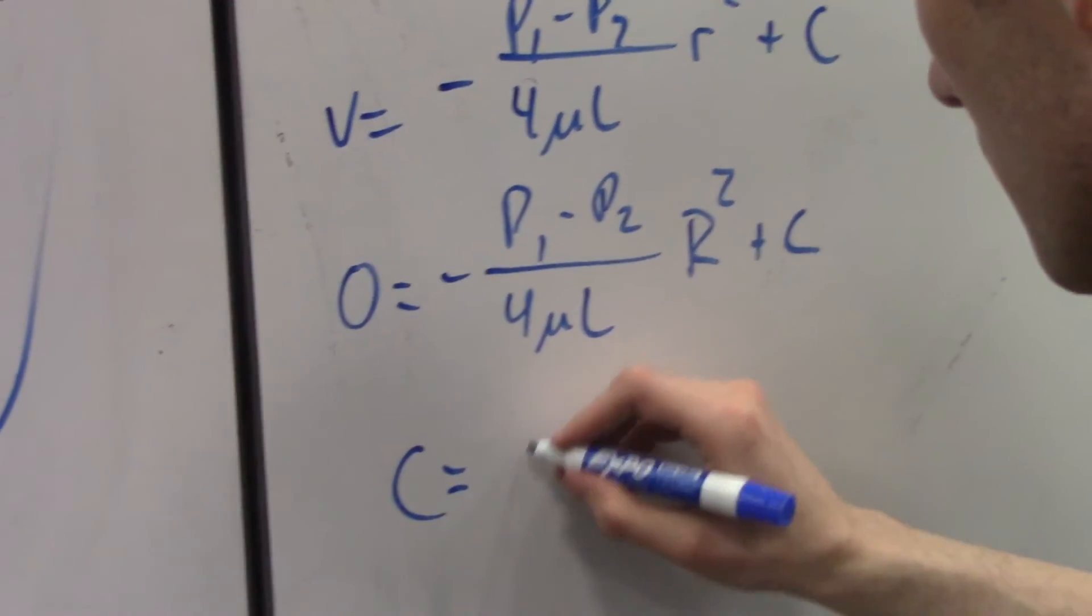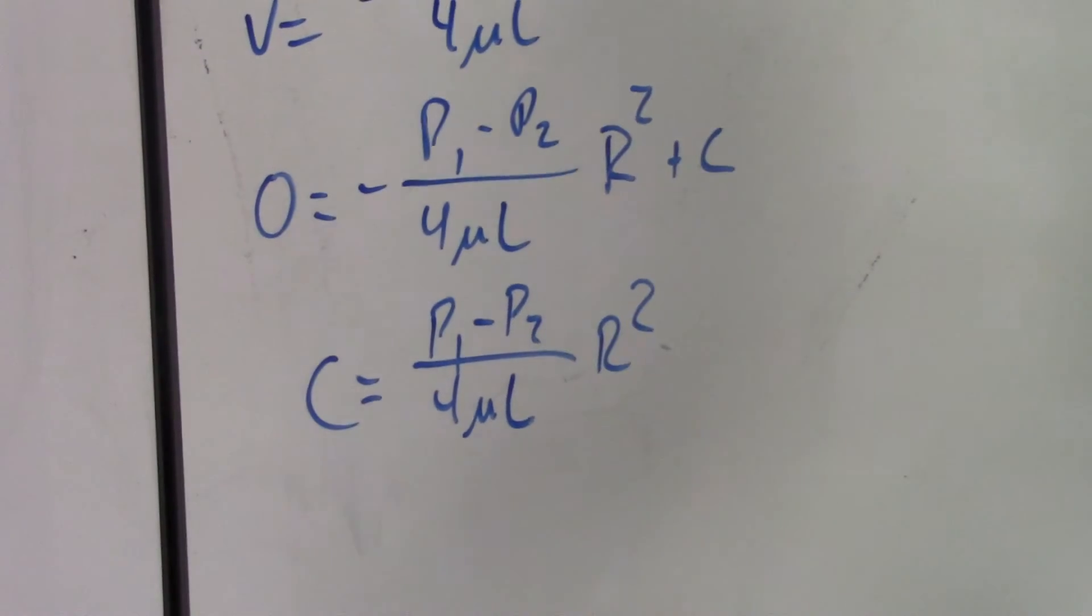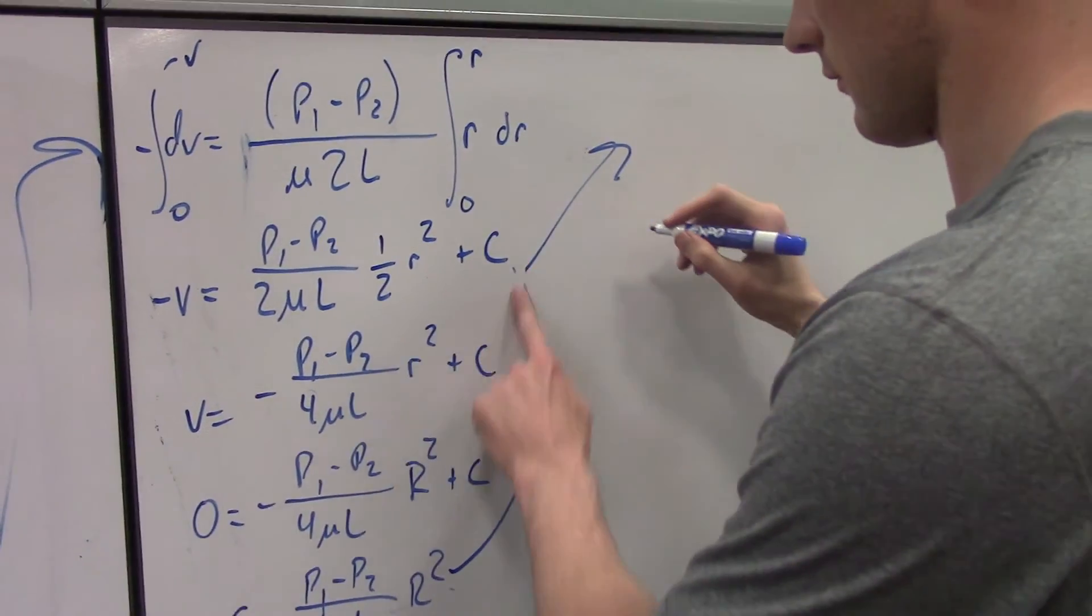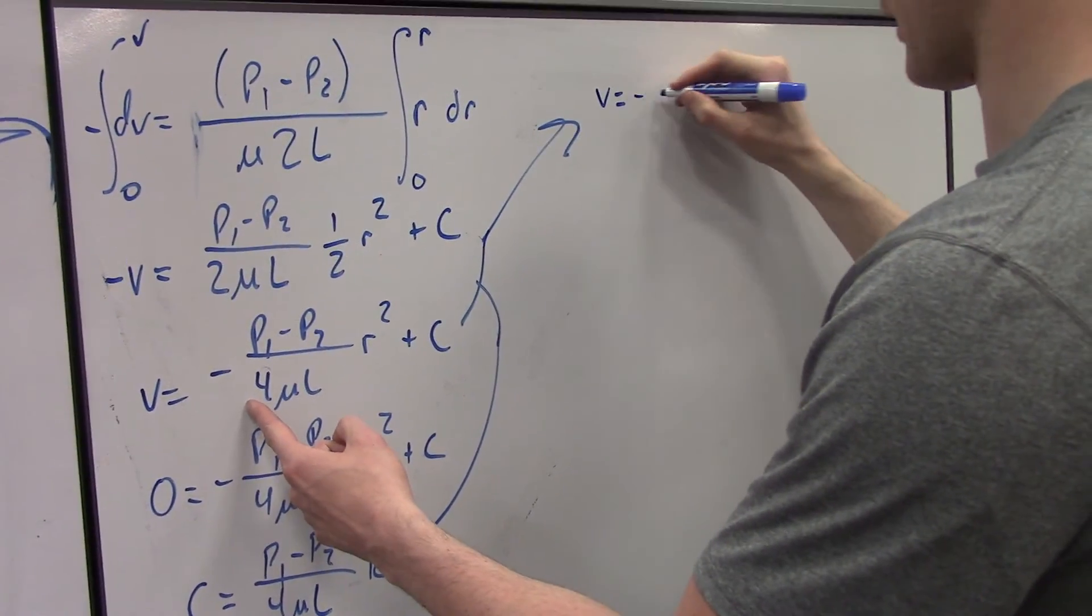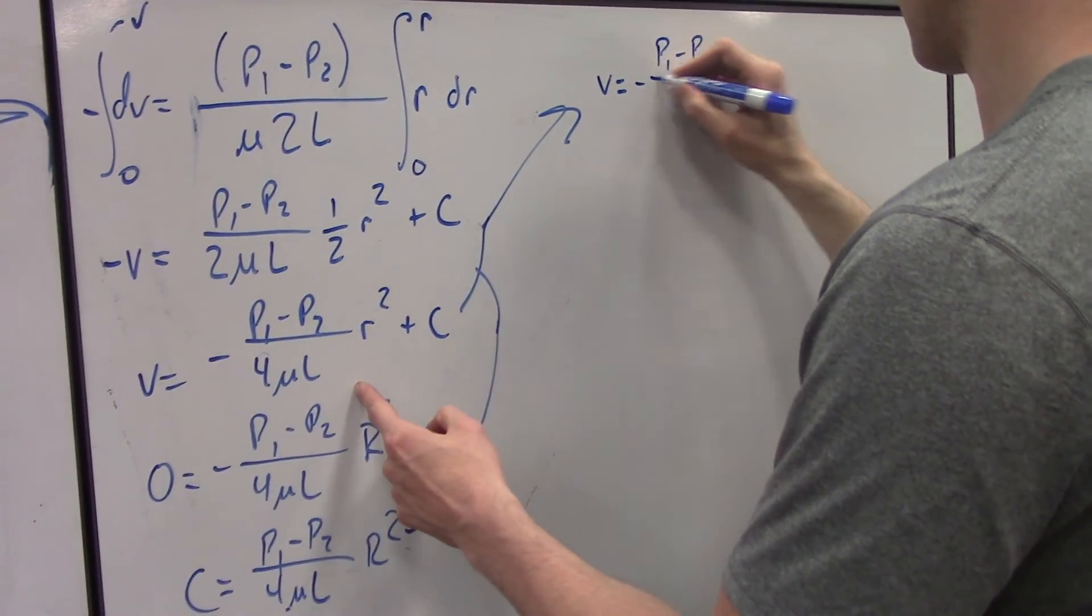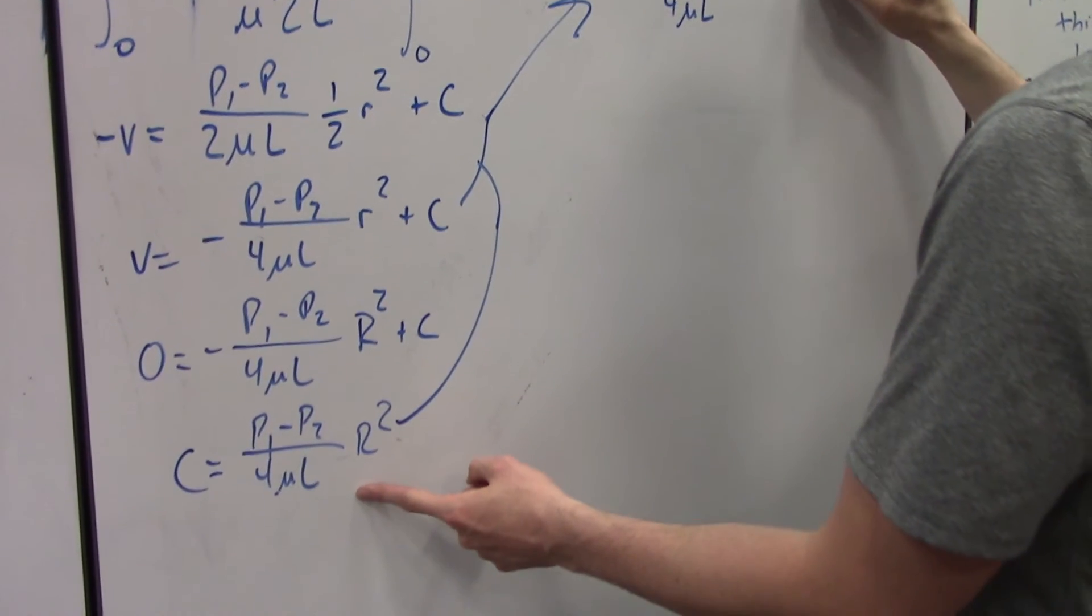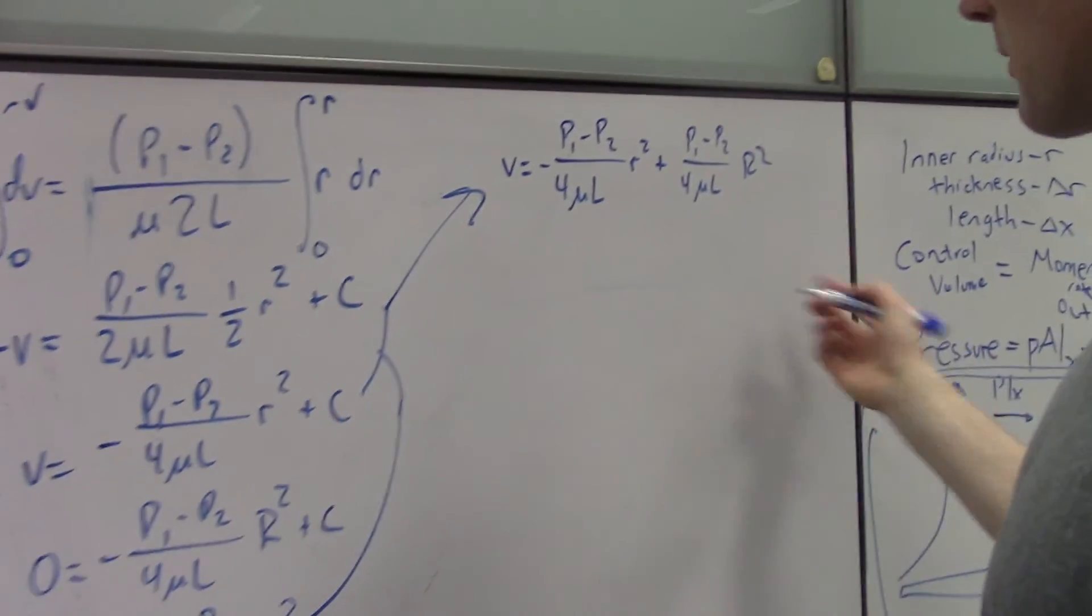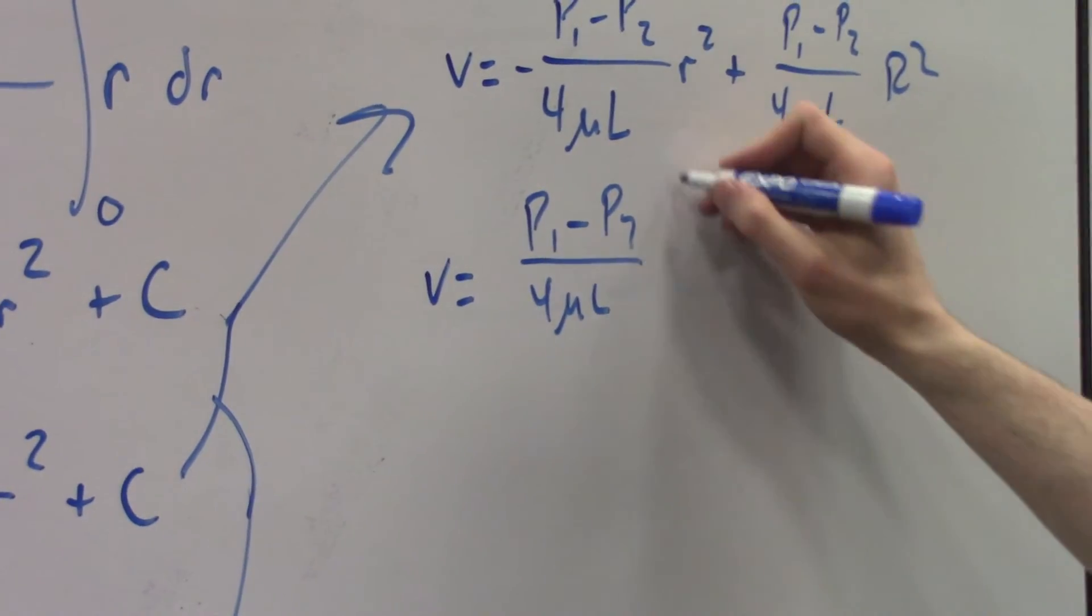C is equal to P1 minus P2 over 4 viscosity L big R squared. Now we input this into this equation right here. We're going to get V equals negative P1 minus P2 over 4 viscosity L. Now we've got big R squared. We have to simplify. We're going to get V equals negative P1 minus P2 over 4 viscosity L. We've got big R squared minus little r squared.